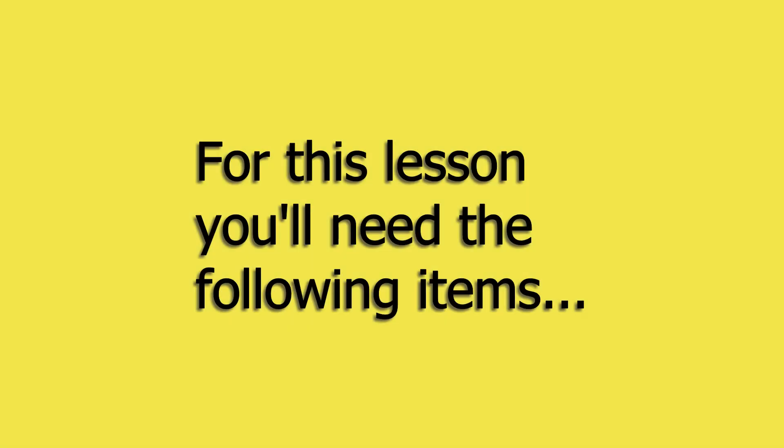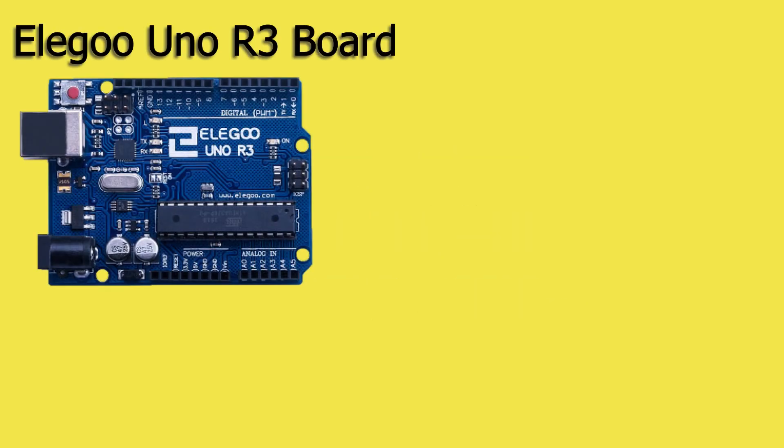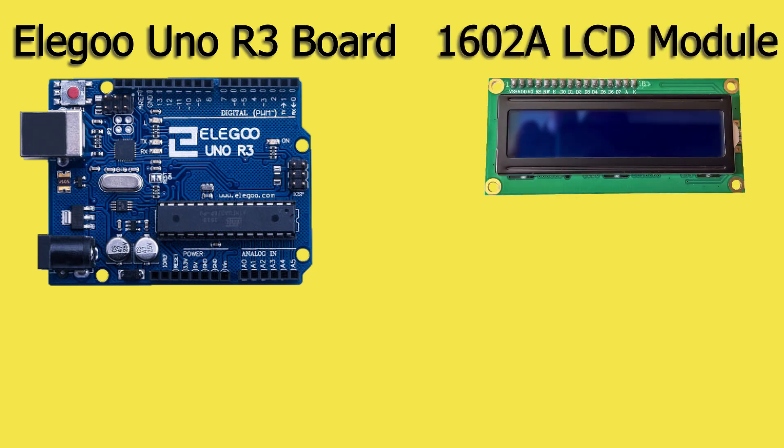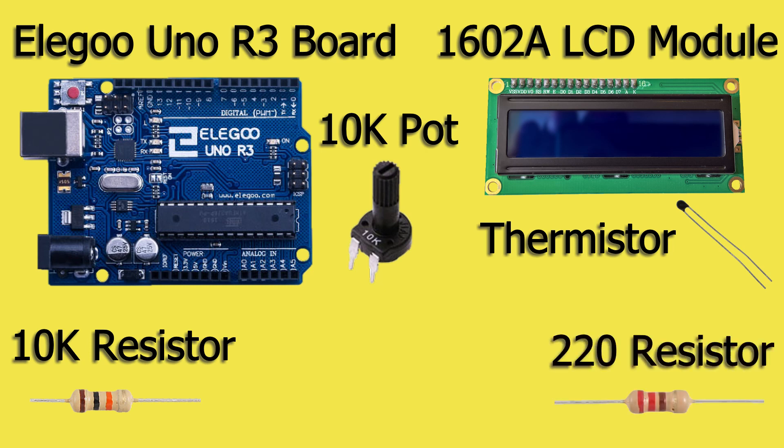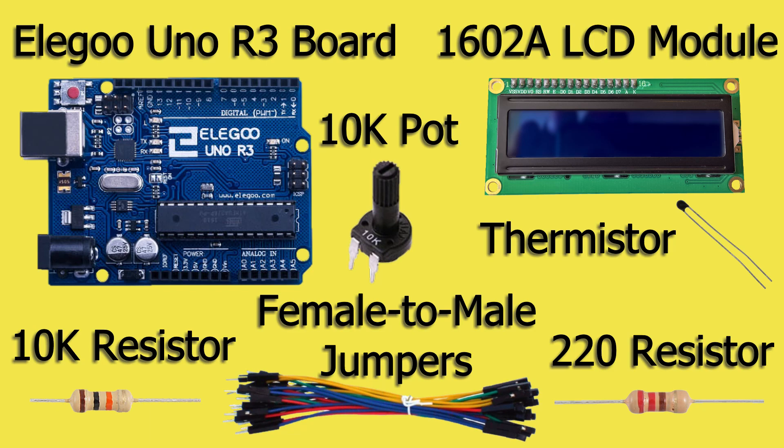For this lesson you'll need the following items from your kit. The Elegoo Uno R3 board, the 1602A LCD module, the thermistor, a 10k potentiometer, a 10k ohm resistor, a 220 ohm resistor, and a bunch of jumper wires.